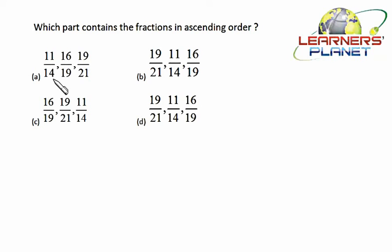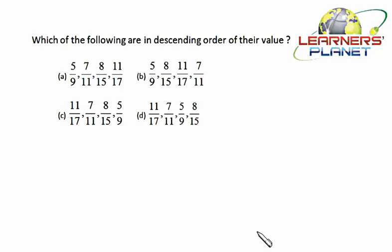So between these two, 16/19 will be greater. Now 16/19 and 19/21 - in this case the difference is 3, in this case the difference is 2. Still the denominator is bigger, so definitely 19/21 will be greater than 16/19. So the first option itself is correct.